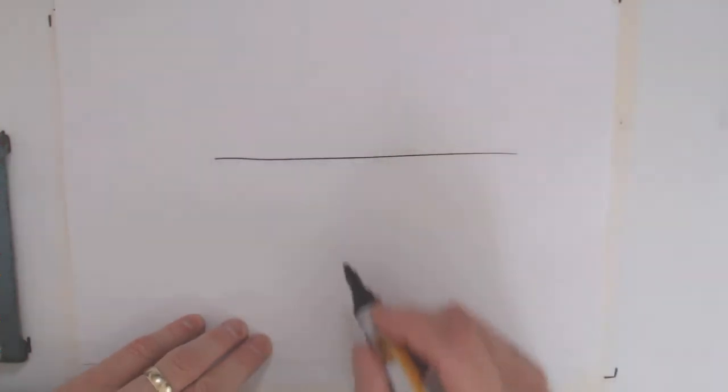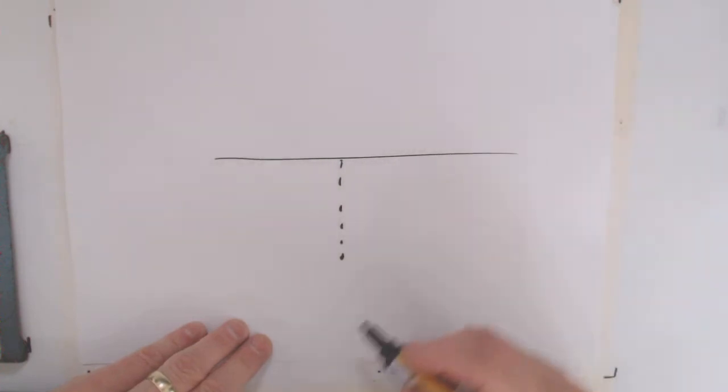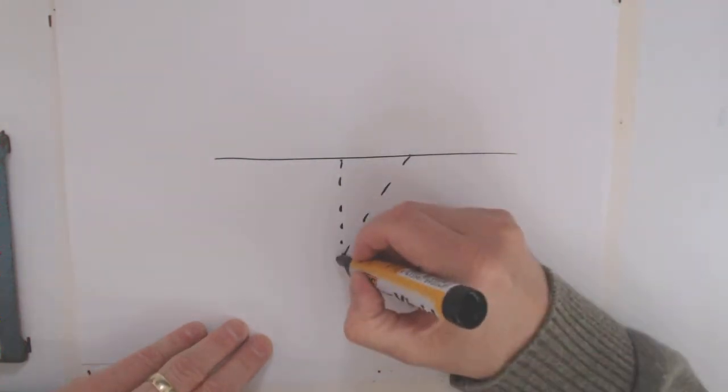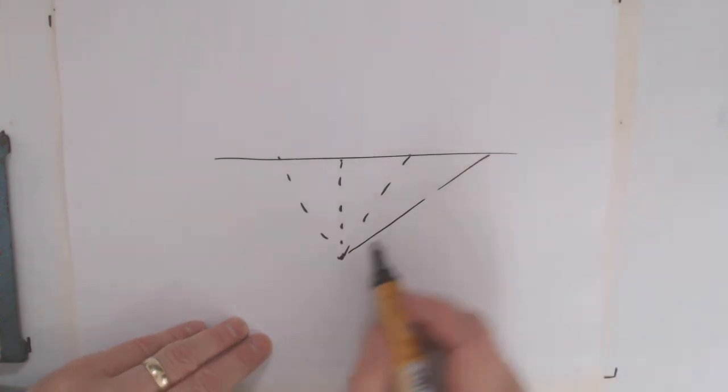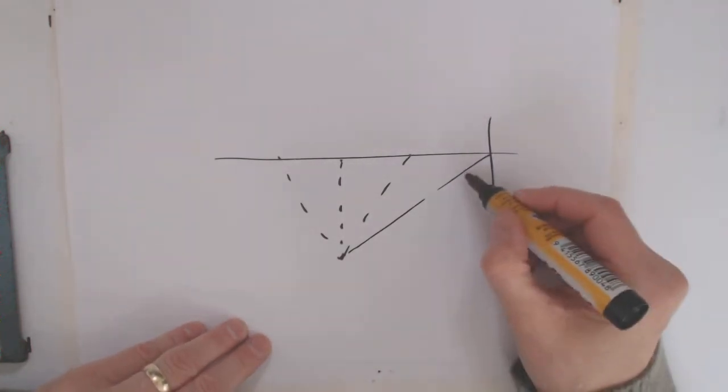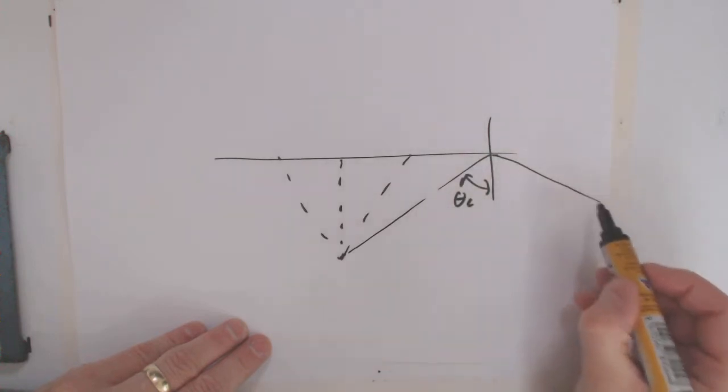What we have is a situation where if you're under the water like this, of course you can look straight up, of course you can look out at certain angles, but there's a certain point at which when you look, you've reached a critical angle theta c.